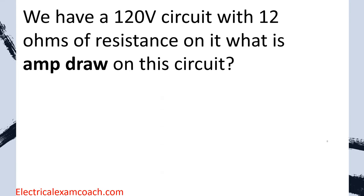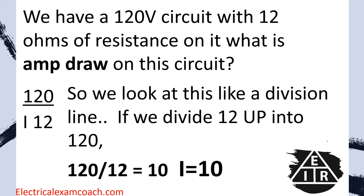In this case, we have a 120-volt circuit with 12 ohms of resistance. What is the amp draw? We plug in what we know: 120 volts and 12 ohms. We divide 120 by 12, which equals 10. That lets us know there should be 10 amps of current on this circuit. We should be able to verify that with our meter. If it's way low or way high, we know we have a problem.